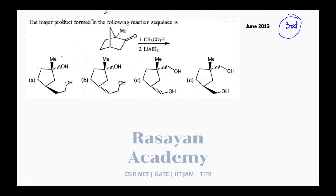The first question asks for the major product formed in the following reaction sequence. In this question you see a norbornane ring system, and the reagent given in the first step is peracetic acid.